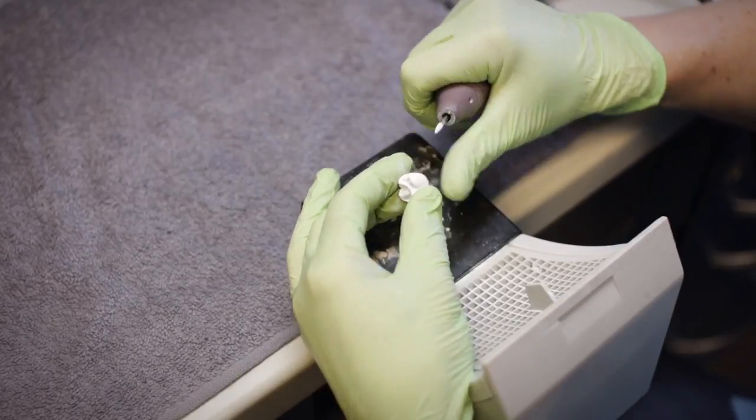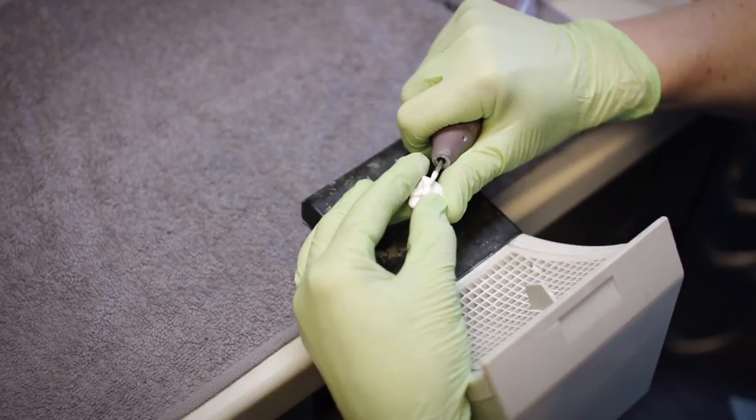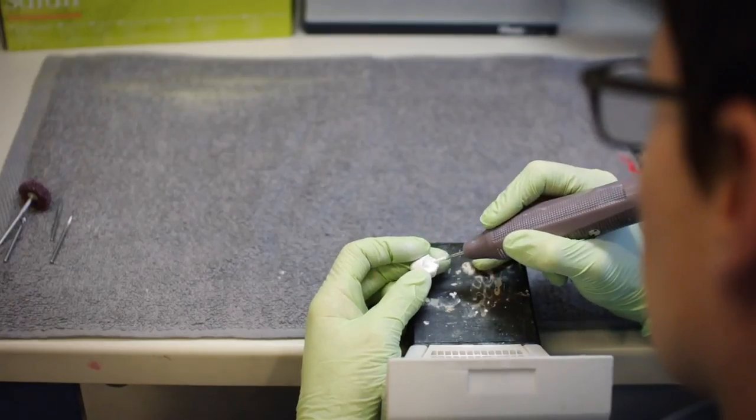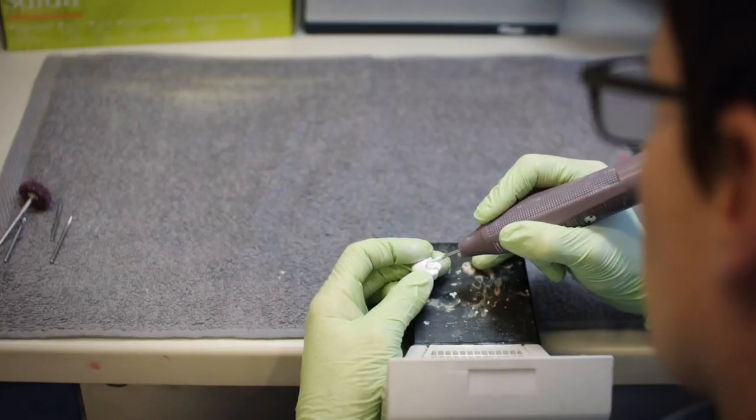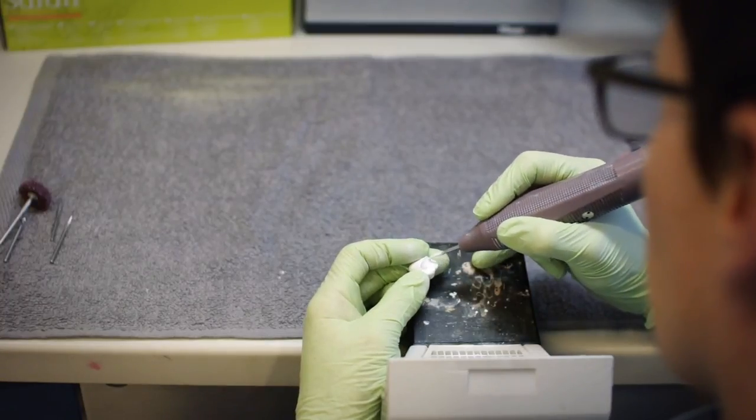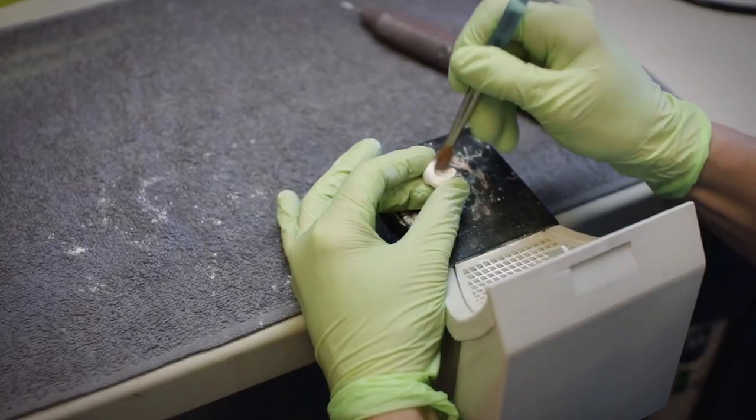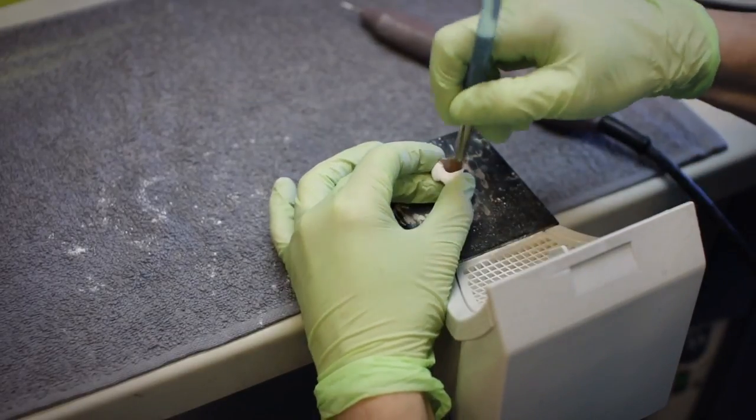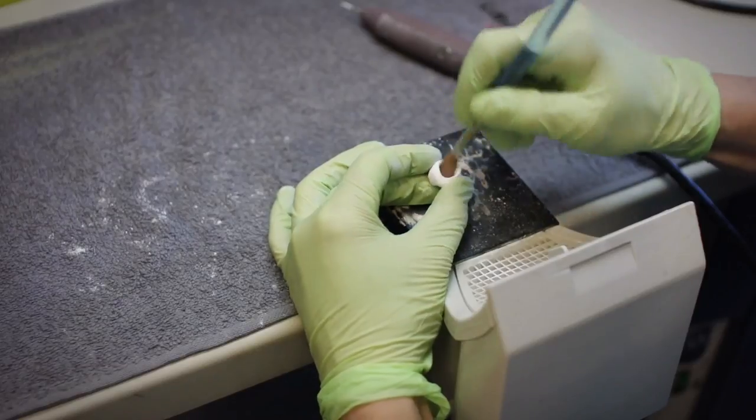Gloves are worn to prevent the patel absorbing the oils from the skin. Contamination would result in the patel not absorbing the paint. After grinding, remove all dust using compressed air and a soft, dry brush. This prevents white marks on the sintered product.